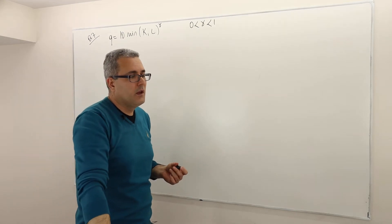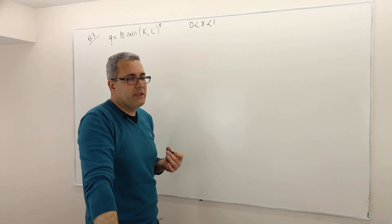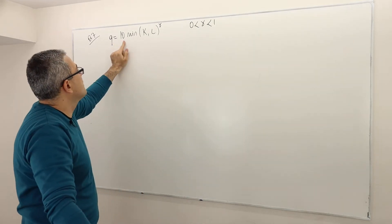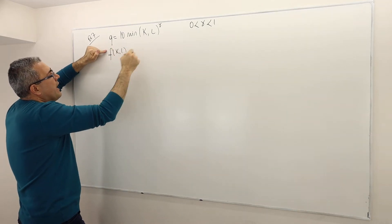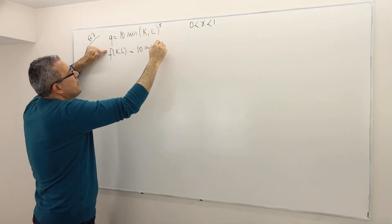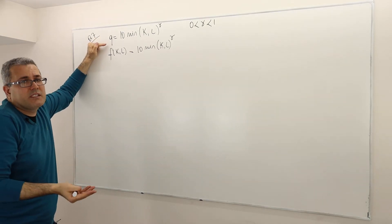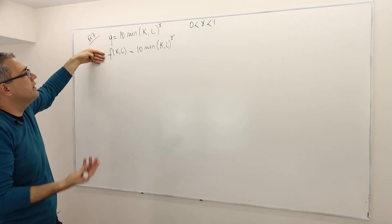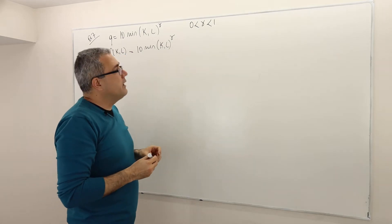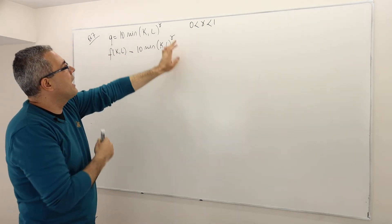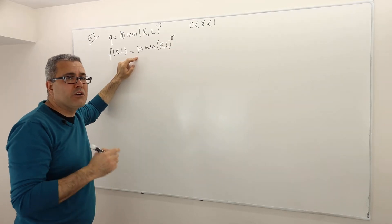If gamma is more than one, for example two, this production function — we write F(K,L) = 10 times minimum of K,L to the power gamma, or equivalently Q = 10 times minimum of K,L to the power gamma — is going to exhibit increasing returns to scale.